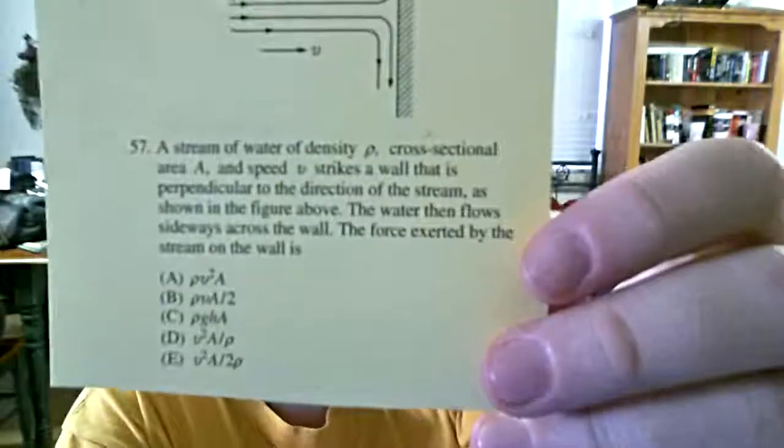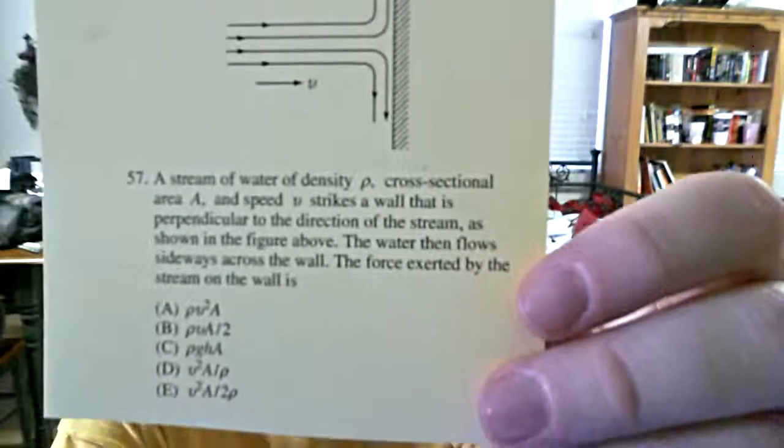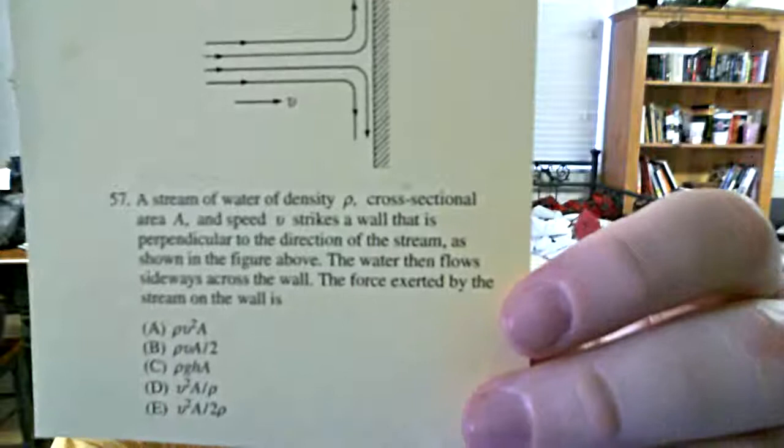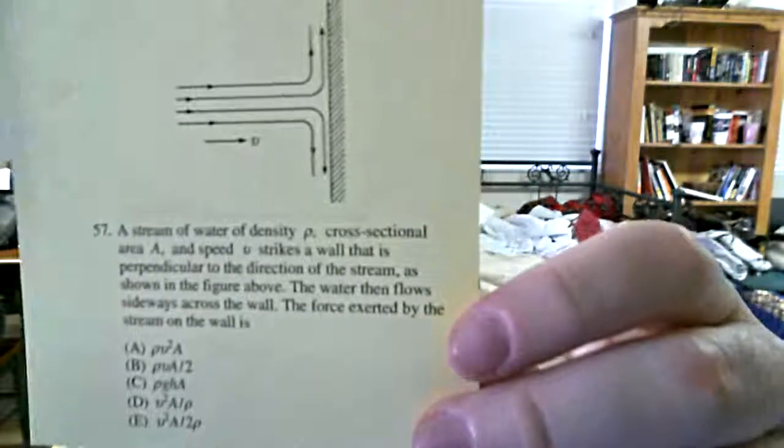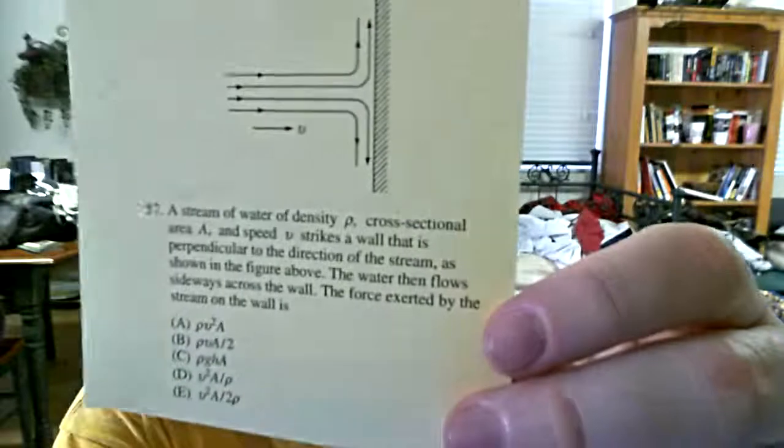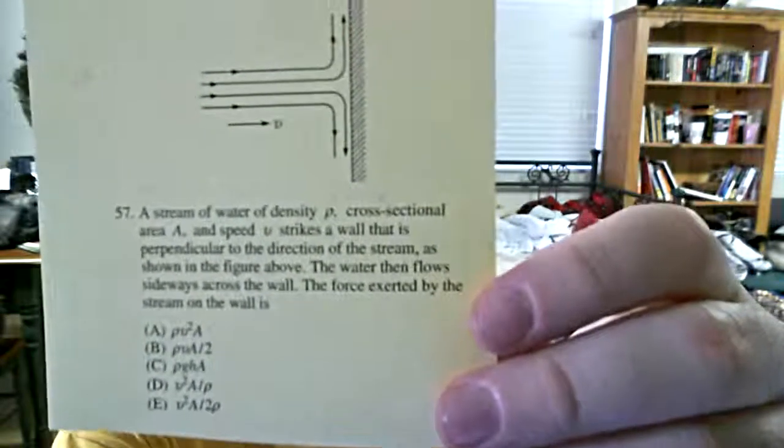So how do we, what do we notice about the units of these? First of all, let's address answer C. After reading the text of the problem, can answer C even be an answer? What is h? It's not written in the diagram. Presumably, I mean, we use h as physicists for some type of height in so many other things, but it's just a ridiculous trick answer in this case.